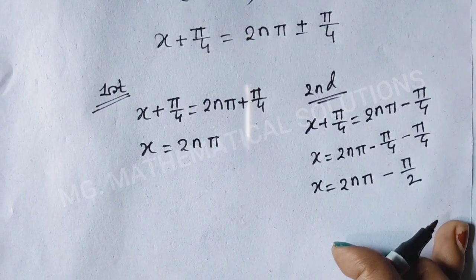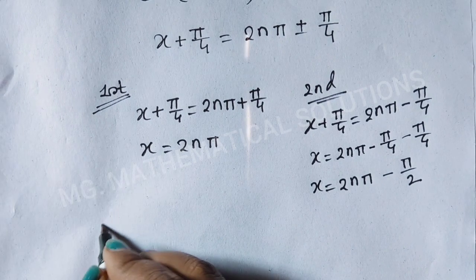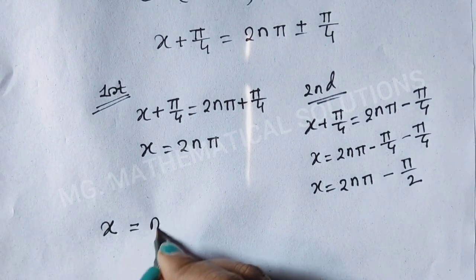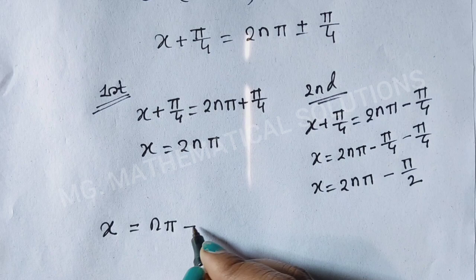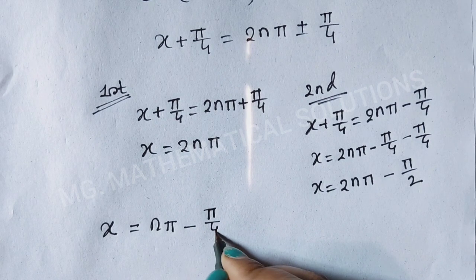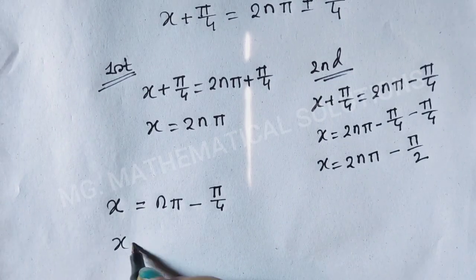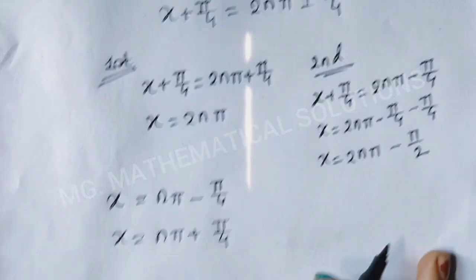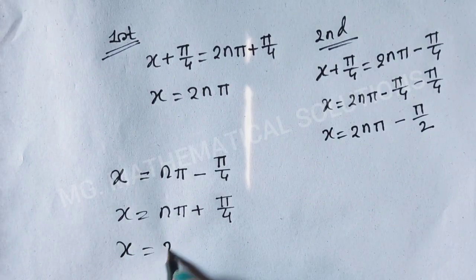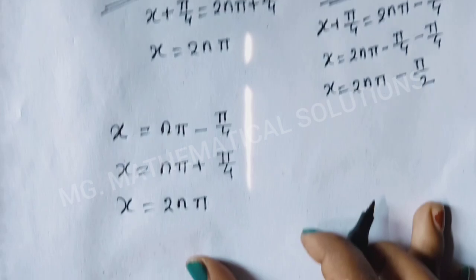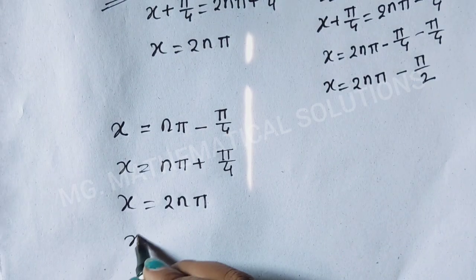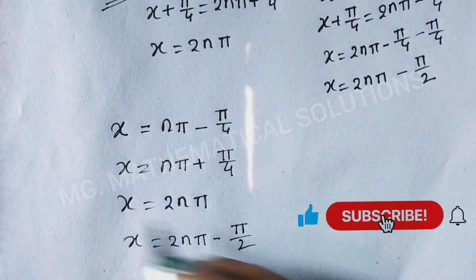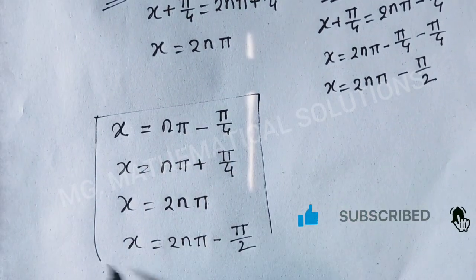So we get four values. First: x = nπ − π/4. Second: x = nπ + π/4. Third: x = 2nπ. Fourth: x = 2nπ − π/2. This is the final answer.